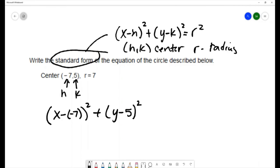And I don't want to leave this squared here, so I'll write this as (x + 7)² + (y - 5)² = 49. So this is the equation of a circle with center (-7, 5) and a radius of 7.